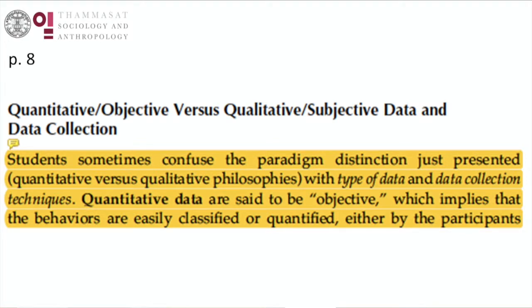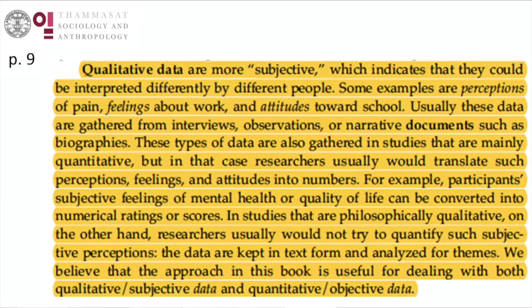Students sometimes confuse the paradigm distinction just presented with the type of data or data collection techniques. Quantitative data is said to be objective, implying that behaviours are less easily classified or quantified by the informants. We've talked about this in terms of one of the myths about ethnographic research. Qualitative data is more subjective, indicating that it could be interpreted differently by different people. Some examples are perceptions of pain, feelings about work, and attitudes towards school. Usually this data is gathered from interviews, observations, or narrative documents such as biography.